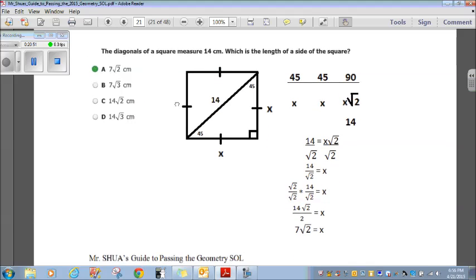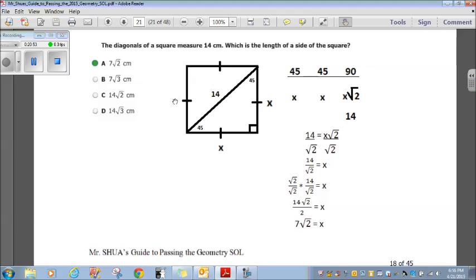Okay, the diagonals of a square measure 14 centimeters. What's the length of a side of the square? Okay, so we have a square, and it says the diagonal is 14 centimeters. So, half of that is going to be a right triangle, and we know it's going to be a 45-45-90 triangle, one of those special right triangles. Now, measurements in a 45-45-90 special right triangle, the sides are X, and the diagonal is always X times radical 2, whatever this number is times radical 2.